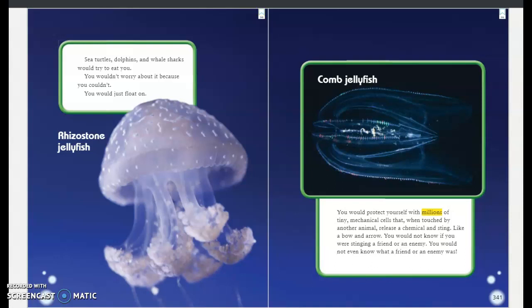Sea turtles, dolphins, and whale sharks would try to eat you. You wouldn't worry about it because you couldn't. You would just float on. And this is a rhizostone jellyfish. The next one is a comb jellyfish.